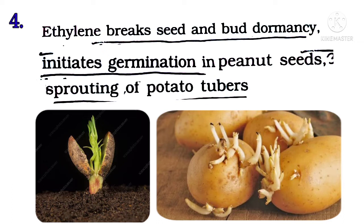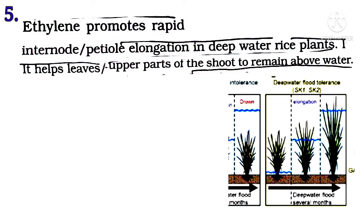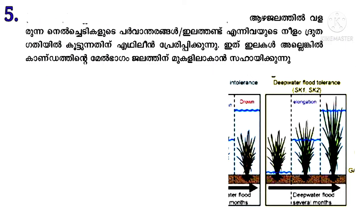It initiates germination in peanut seeds and sprouting of potato tubers. Ethylene also promotes rapid internode or petiole elongation in deep water rice plants, helping leaves and upper parts of the shoot to remain above water.